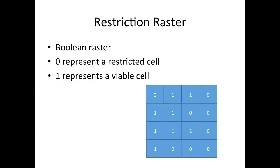What we're going to produce in this tutorial is a restriction raster, which is a boolean raster. A boolean raster contains just zeros and ones, where zero represents a restricted cell to develop a waste disposal site, and one represents a cell viable to develop a waste disposal site.